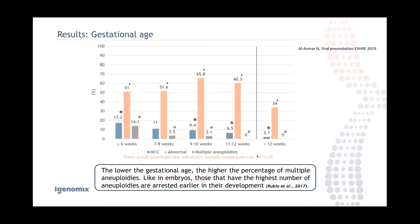Also, the lower the gestational age, the higher the percentage of multiple aneuploidies — two or more aneuploidies. Interestingly, as opposed to what we see in embryos where multiple aneuploidies typically involve only two, in our 2,500 POC cases we found only two cases with three aneuploidies and only one with four. Just as in embryos, multiple aneuploidies cause arrest — here it leads to an earlier miscarriage. After 11 weeks of gestation we found no cases of multiple aneuploidy.